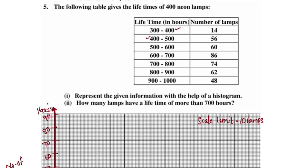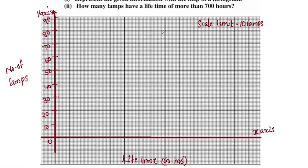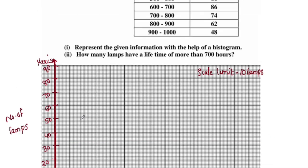We need to put a break on the x-axis since we start at 300, not at 0. We are going to take the x-axis range from 300 to 1000, with a break indicated at the start of the axis.